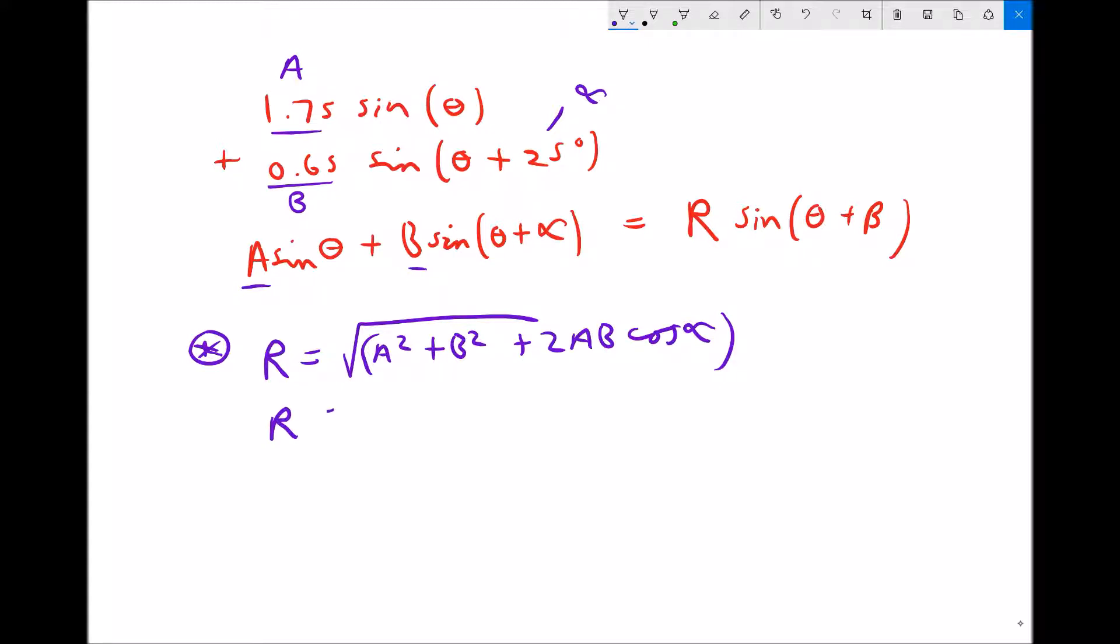But our R value then, if we input those values, we've got the square root of a² - 1.75² - plus b² which is 0.65², plus 2 times 1.75 times 0.65 cos 25°.